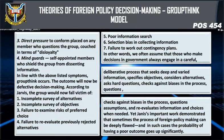Further symptoms under Type three include: illusions of unanimity among group members, where silence is viewed as agreement; direct pressure placed on any member who questions the group, couched in terms of disloyalty; and mind guards — self-appointed members who shield the group from dissenting information.